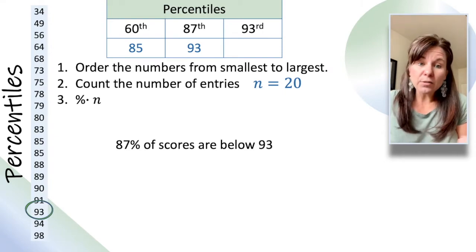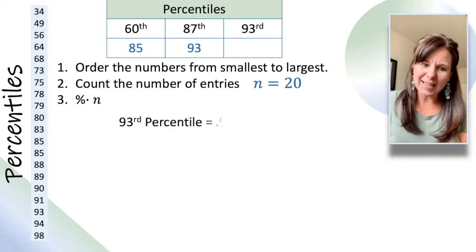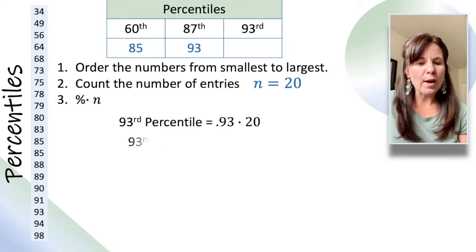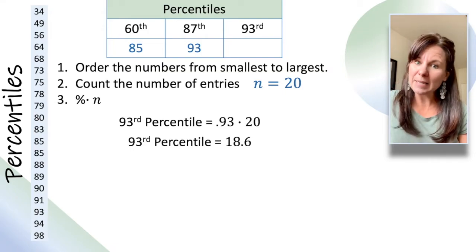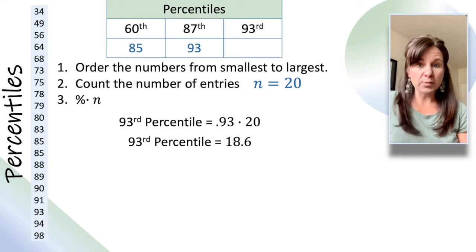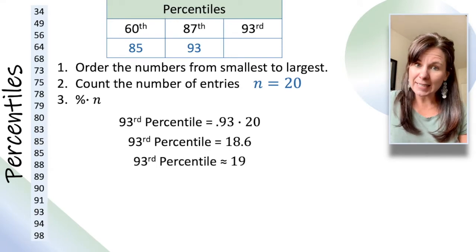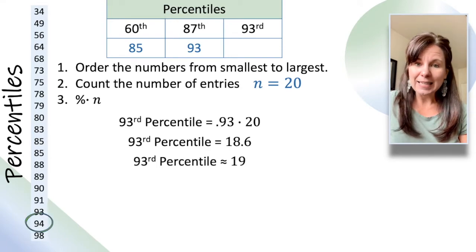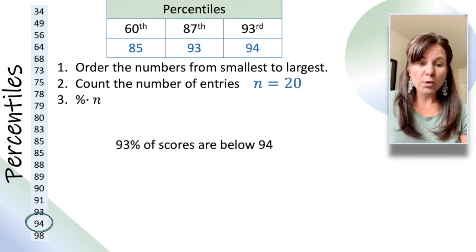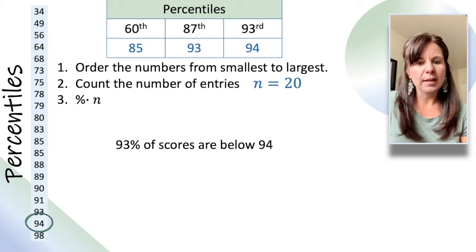Let's try the last one, 93rd percentile. Same process. 0.93 times 20, we get 18.6. Always round up. So, that's 19. The 19th number is 94, which means that 93% of scores are below 94.